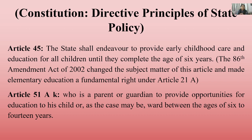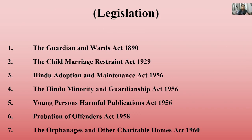Articles 39, 43, 45, and 51 are the most important DPSP articles for child rights. Regarding legislation, there are many acts. The Guardian and Wards Act 1890, the Child Marriage Restraint Act, the Adoption and Maintenance Act, and the Hindu Minority and Guardianship Act 1956 are among the key early legislation.